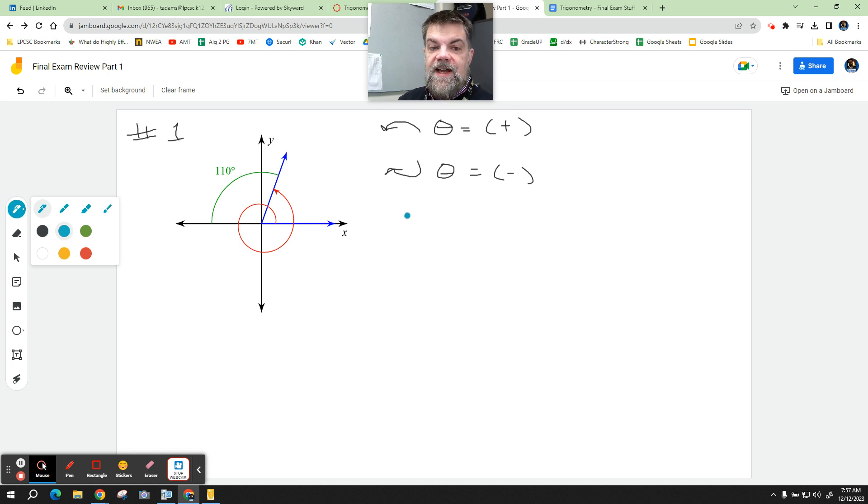I know that the measure of a straight line is 180 degrees. And so if they give me that this is 110 degrees, then this measurement inside here is 70 degrees, right? Because 110 plus 70 is 180 degrees.